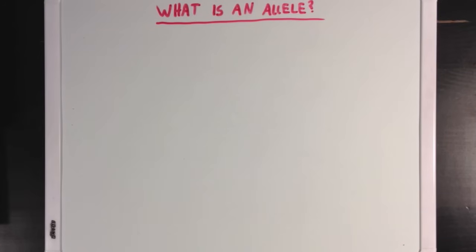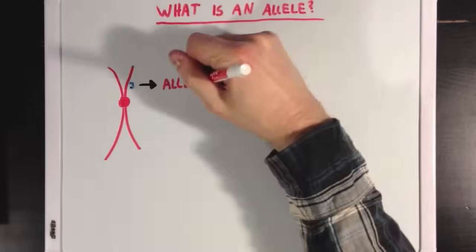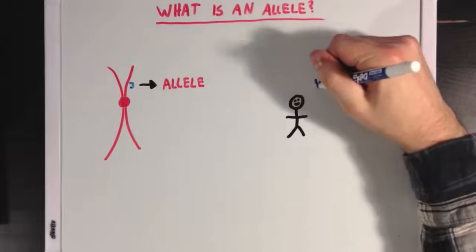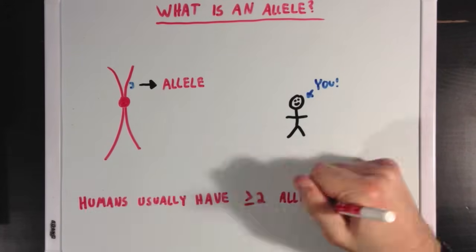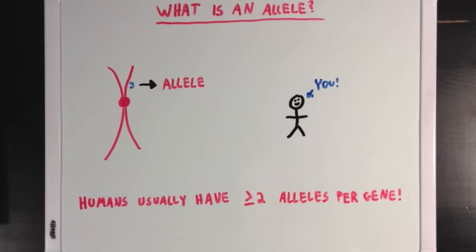Now the first thing I want to introduce is the term allele. Now if we have a chromosome here, then an allele is one small section on that chromosome that codes for a specific gene that makes you, you. Now since humans have at least two copies of each chromosome, we can say that humans usually have at least two alleles for every specific gene, one allele from their mother, and one from their father.